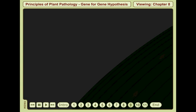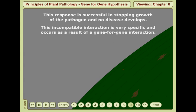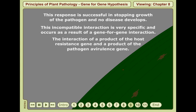This response is successful in stopping growth of the pathogen and no disease develops. This incompatible interaction is very specific and occurs as a result of a gene-for-gene interaction. That is, the interaction of a product of the host resistance gene and a product of the pathogen avirulence gene.